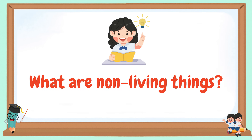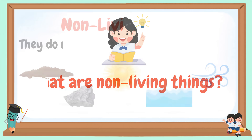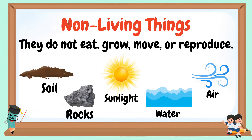What are non-living things? Non-living things do not eat, grow, move, or reproduce. Examples: soil, rocks, sunlight, water, and air.